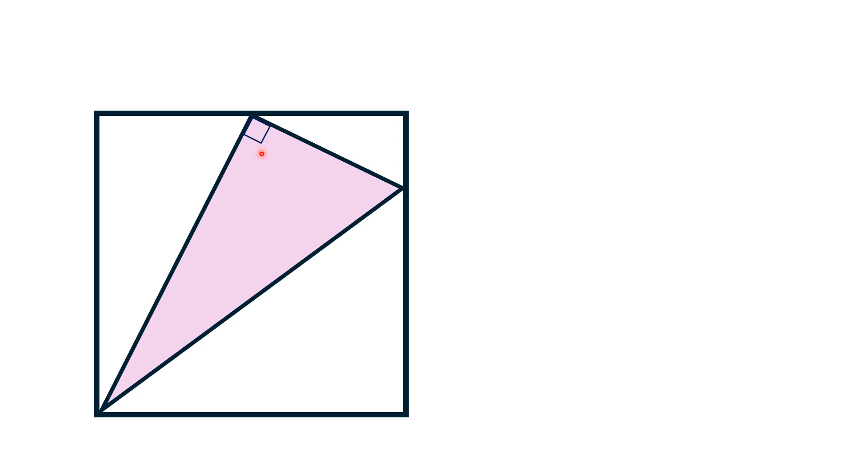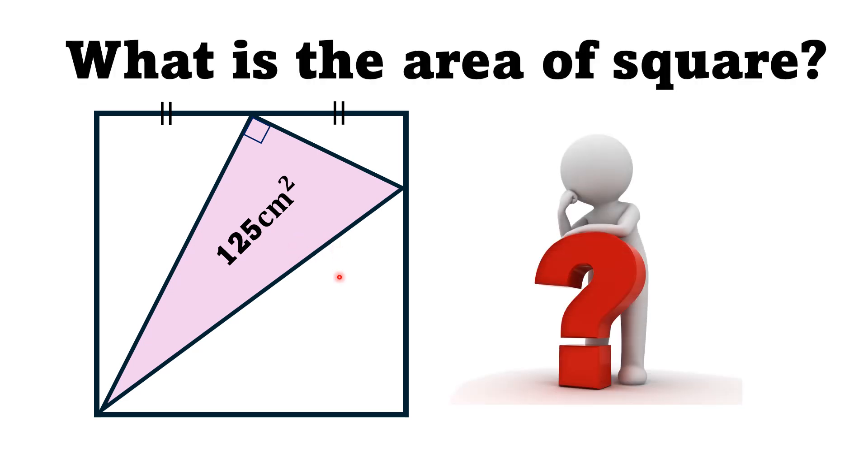The vertex at 90 degree angle is meeting the other side of the square in such a way that it divides that side into two equal parts. The area of this right triangle is 125 centimeter square, then by this limited data, we have to find the area of this square.